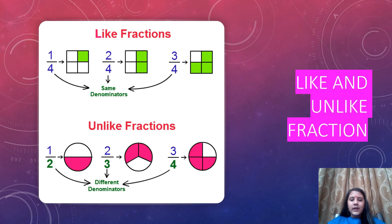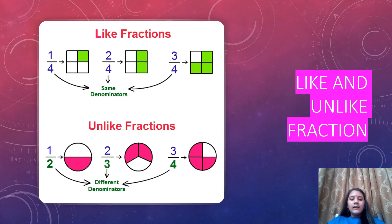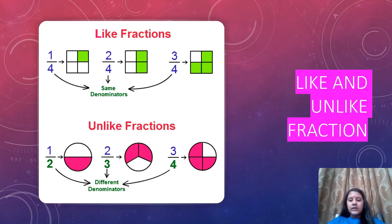There is an example of like fractions and unlike fractions. The numbers 1 upon 4, 2 upon 4, 3 upon 4 are like fractions because the denominator is the same. Unlike fractions: 1 upon 2, 2 upon 3, 3 upon 4 — this is an unlike fraction because the denominator is not the same.